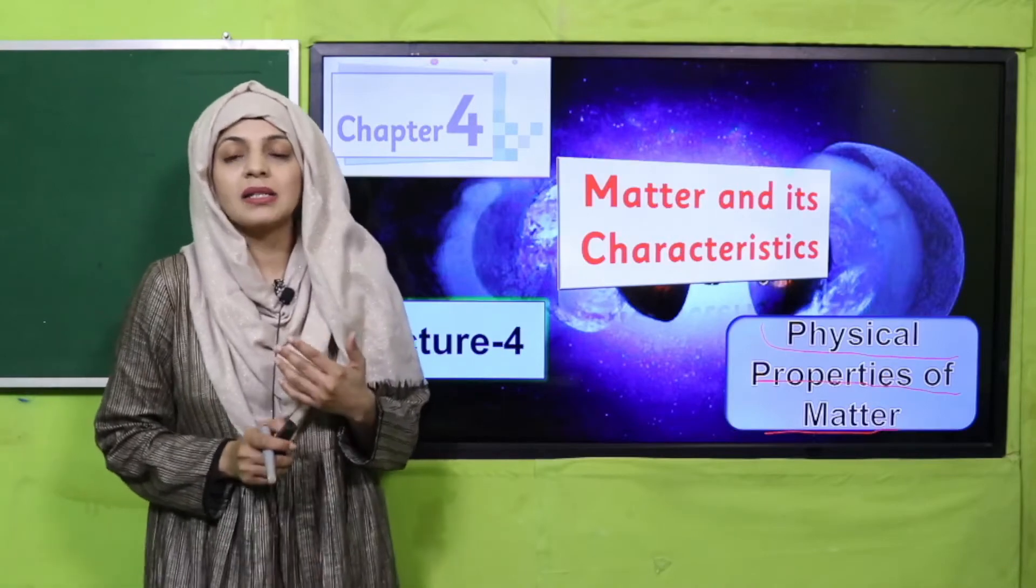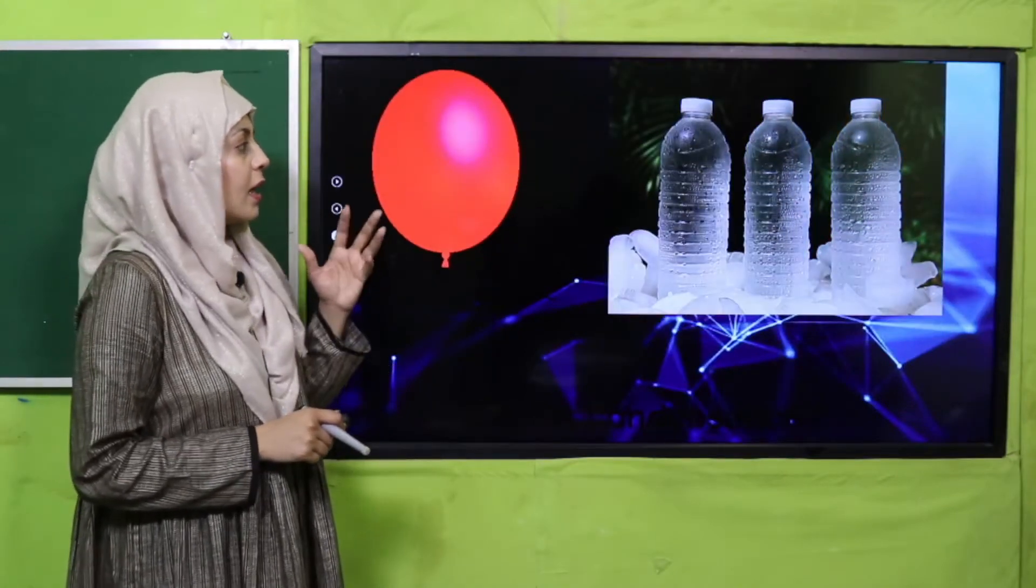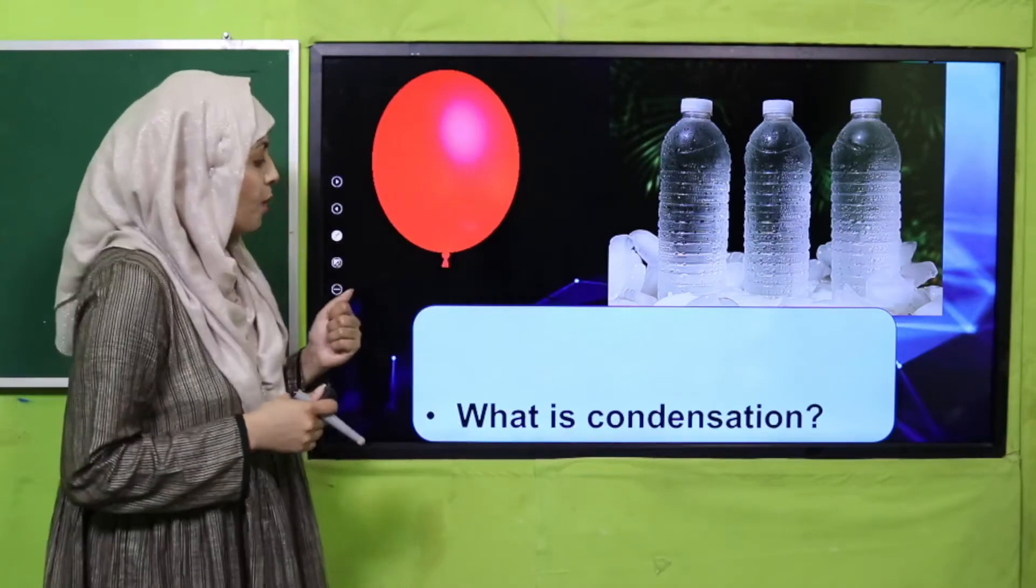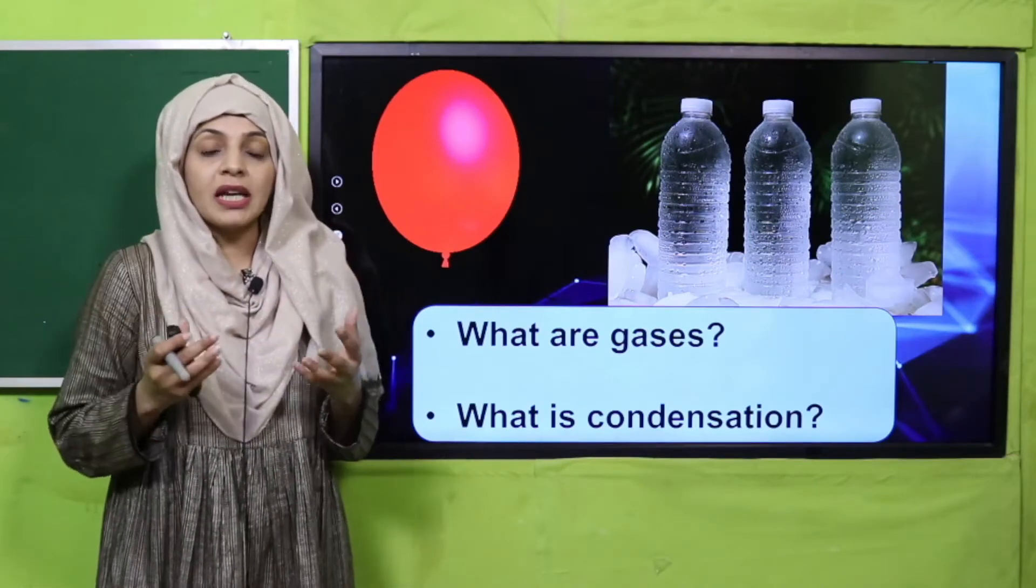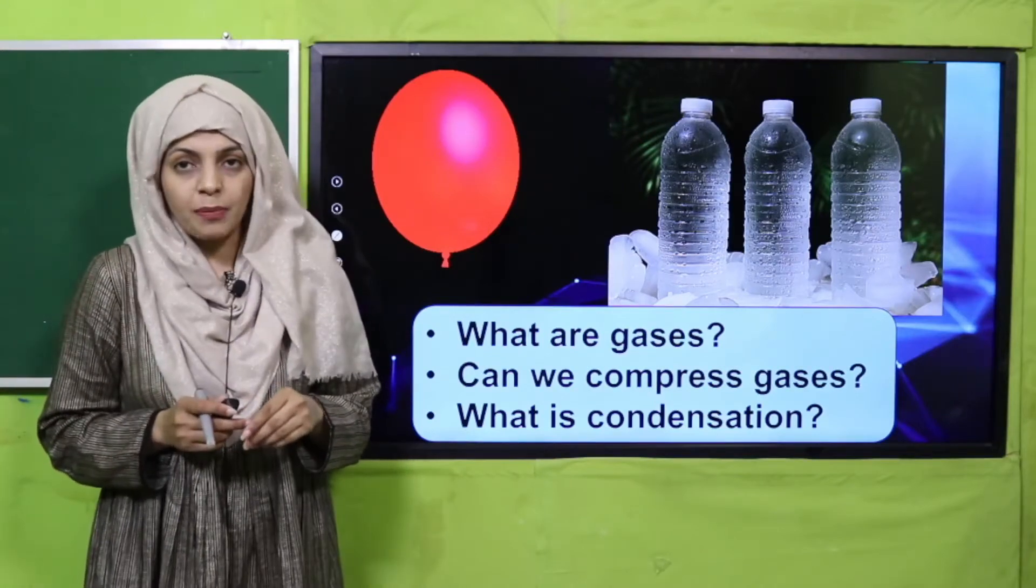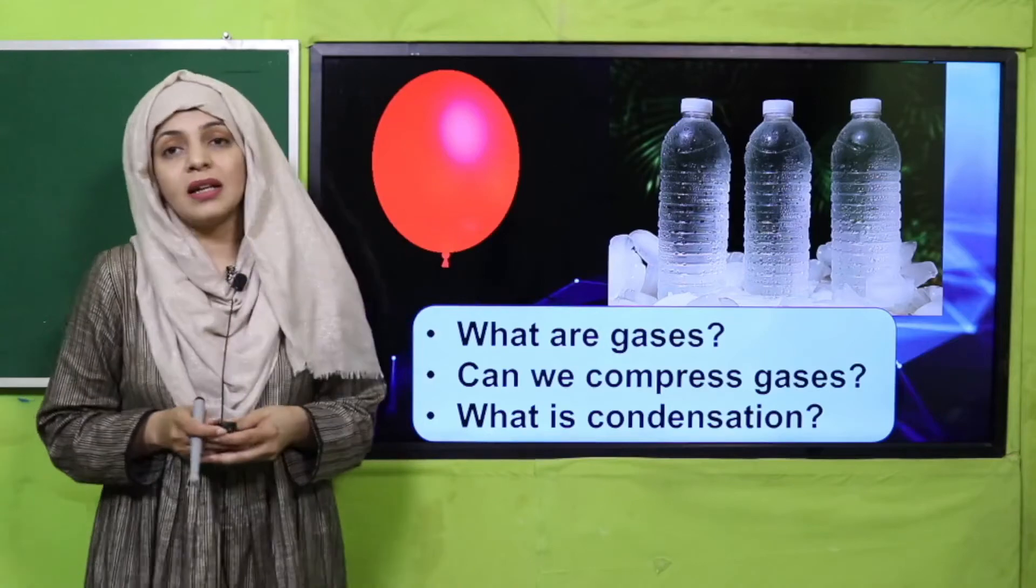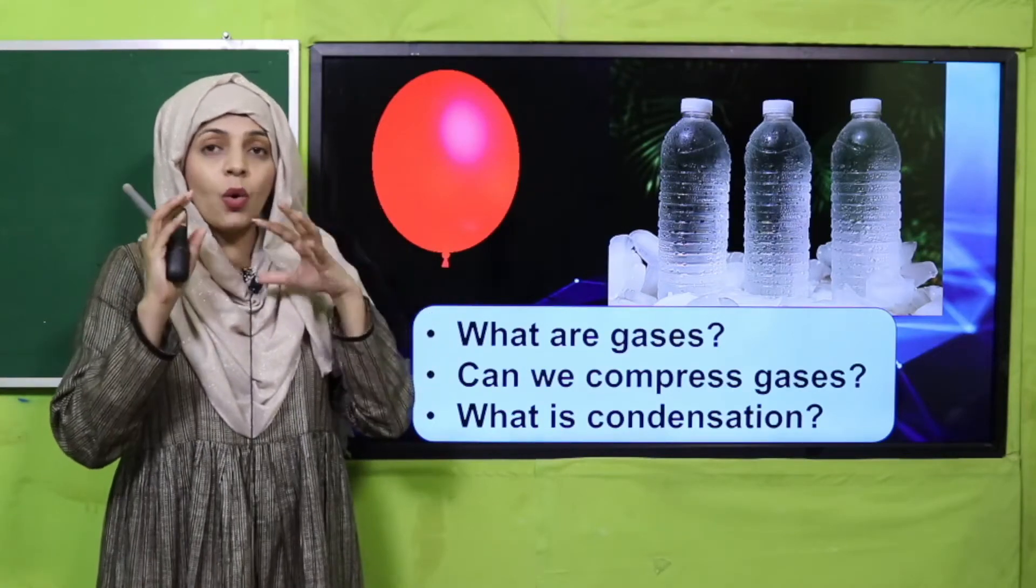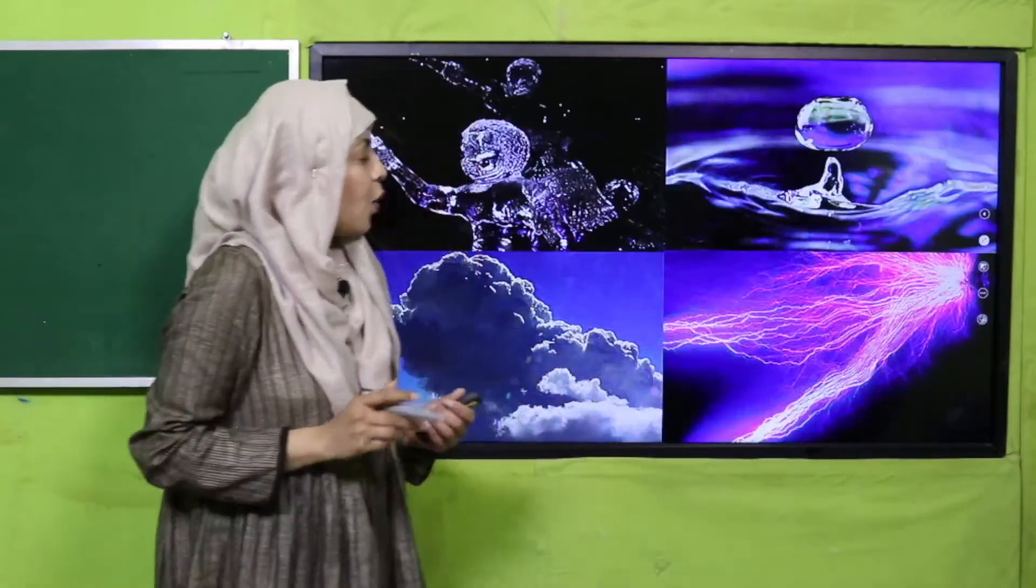My dear students, let's quickly recap what we did in the previous lecture. Here is a balloon and you can see very cold water bottles. We previously learned about gas. Gases do not have a fixed or definite shape, they take up the shape of the container and occupy all the space in the container. We can compress gases because they have large spaces between their particles. Condensation is the change from gas to liquid when we lower down its temperature.